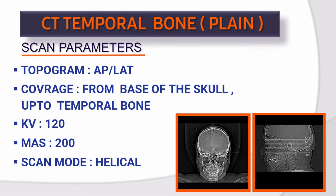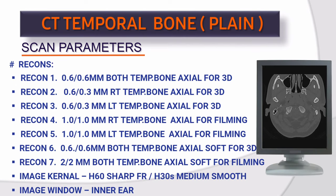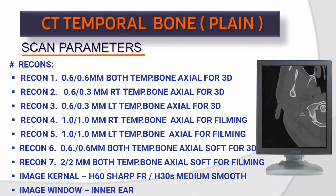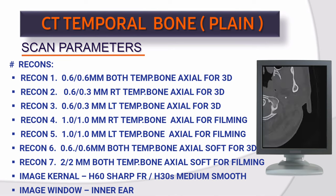Scan parameters: Topogram — AP and lateral. Coverage from base of skull to temporal bone. kV 120, mAs 200. Scan mode: helical. Collimation 0.6 mm, slice thickness 0.6 mm, slice interval 0.3 mm, pitch 0.8, rotation time 1 second. Scan direction: caudocranial. Scan delay: 2 seconds. Recon 1: 0.6×0.6 mm both temporal bone axial thin bone for 3D. Recon 2: 0.6×0.3 mm right temporal bone axial thin bone for 3D.